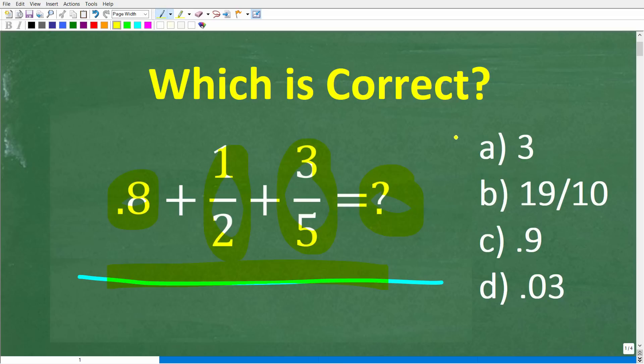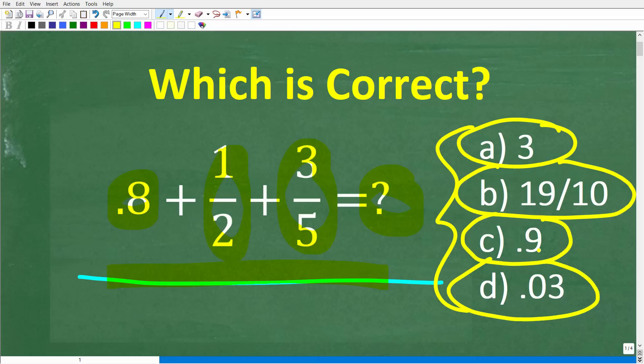We have a multiple choice question here. Let's take a look at our answers. A is 3, B is 19 over 10, C is 0.9, and D is 0.03.